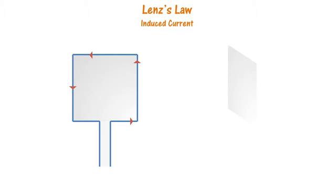As per Lenz's law, the current induced in a loop is such that it opposes the change in magnetic flux. In this video we will start with an important concept and then go ahead and solve some examples.